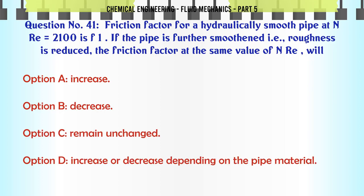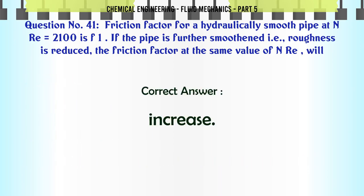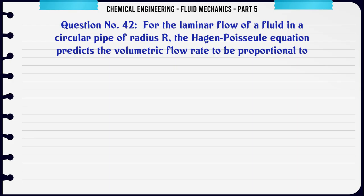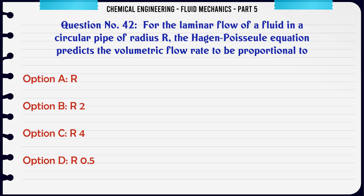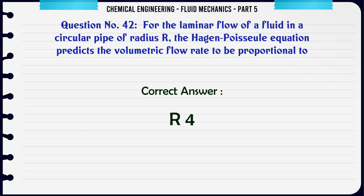Friction factor for a hydraulically smooth pipe at Re = 2000 and 100 is F1. If the pipe is further smoothened, i.e. roughness is reduced, the friction factor at the same value of Re will: a) increase, b) decrease, c) remain unchanged, d) increase or decrease depending on the pipe material. The correct answer is remain unchanged. For the laminar flow of a fluid in a circular pipe of radius R, the Hagen-Poiseuille equation predicts the volumetric flow rate to be proportional to: a) r, b) r², c) r⁴, d) r^0.5. The correct answer is r⁴.